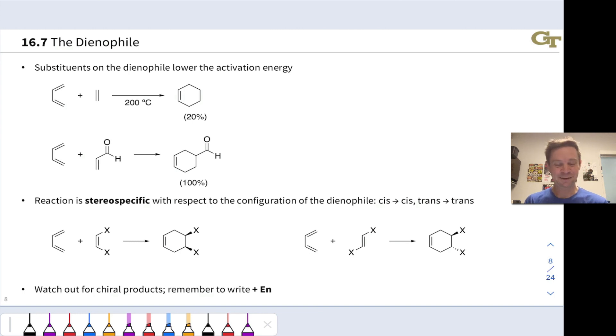That's not great, but if we replace one of the hydrogens on ethylene with a formyl or aldehyde group, all of a sudden the reaction becomes a lot faster and a lot more effective. We get quantitative yield of the cyclohexene, the formyl substituted cyclohexene, at much lower temperatures, closer to room temperature.